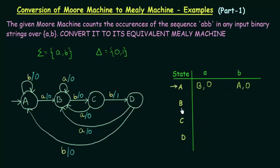Come to state B. B on getting input small a goes to B itself, and the output associated is 0. On input small b, B goes to state C, and the output associated to this small b is 0.